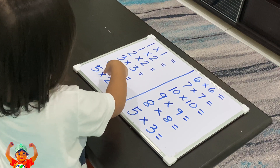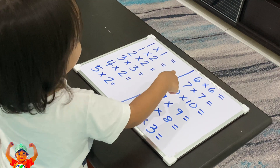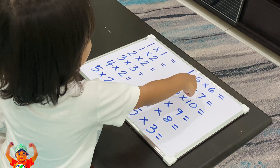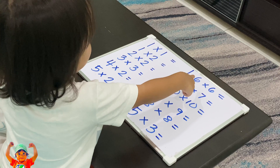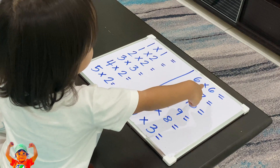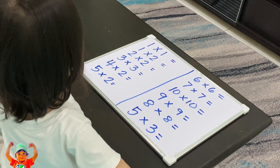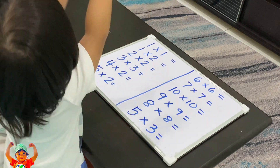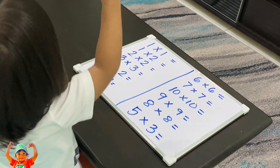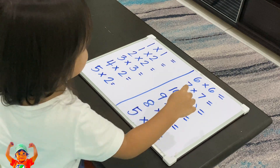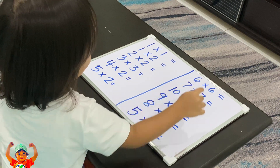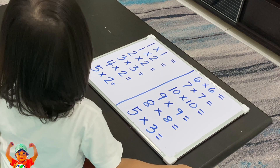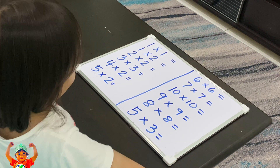Five times two equals ten. Six. Six times six equals... difference. Seven times seven equals... okay, nine.